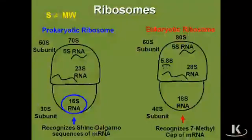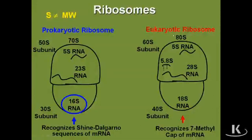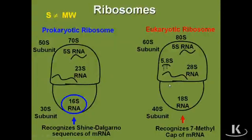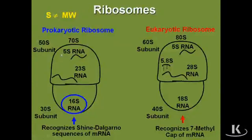To summarize the key features: the prokaryotic ribosome is 70S complete, divided into a large 50S and small 30S subunit. The eukaryotic ribosome is 80S complete, subdivided into a large 60S and small 40S. Translation initiation in prokaryotes involves binding of the 16S rRNA to the Shine-Dalgarno sequence; in eukaryotes it's binding of the complete small 40S subunit to the cap on the mRNA. It will also be important to learn the antibiotics that bind and inhibit protein synthesis in prokaryotes — some block the 50S subunit, others block the 30S subunit — which we'll review later.